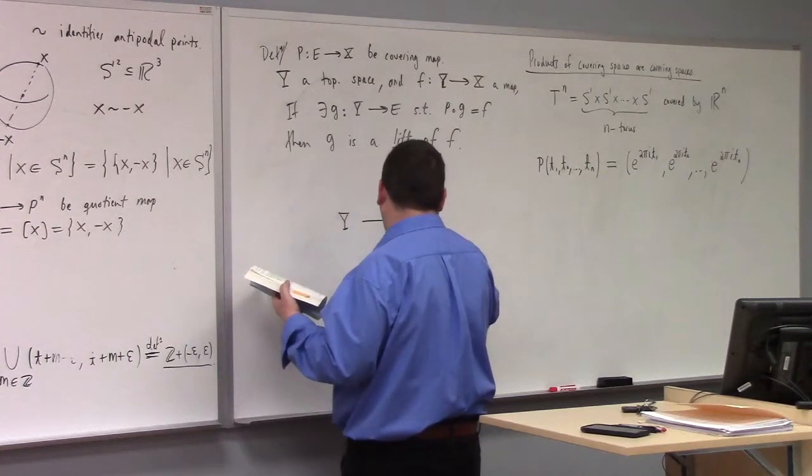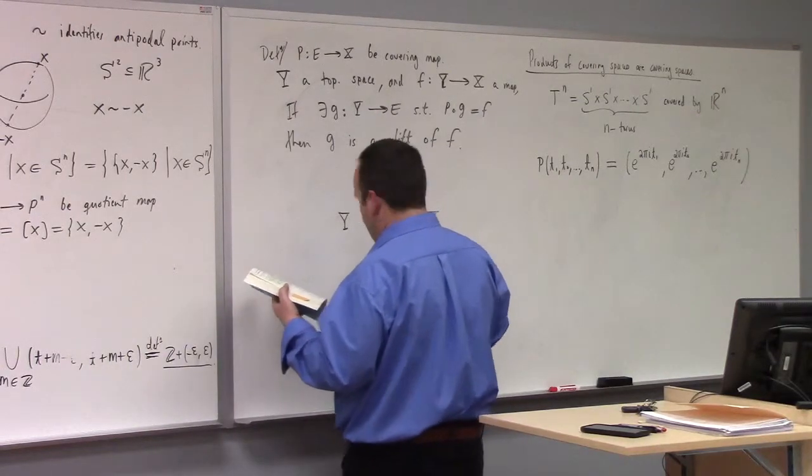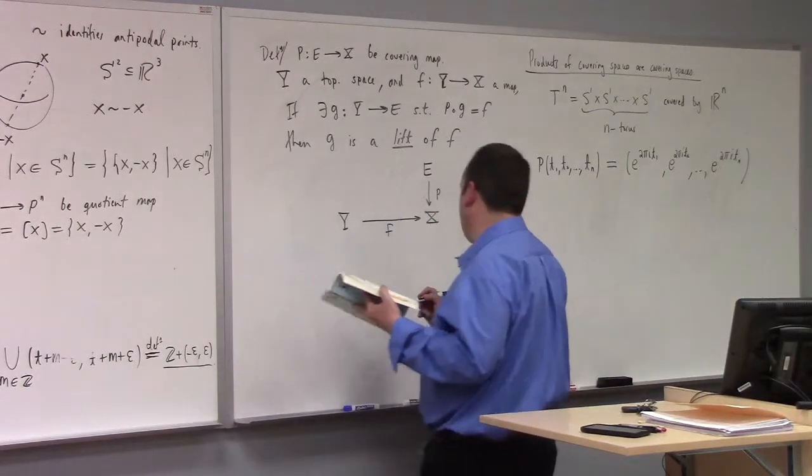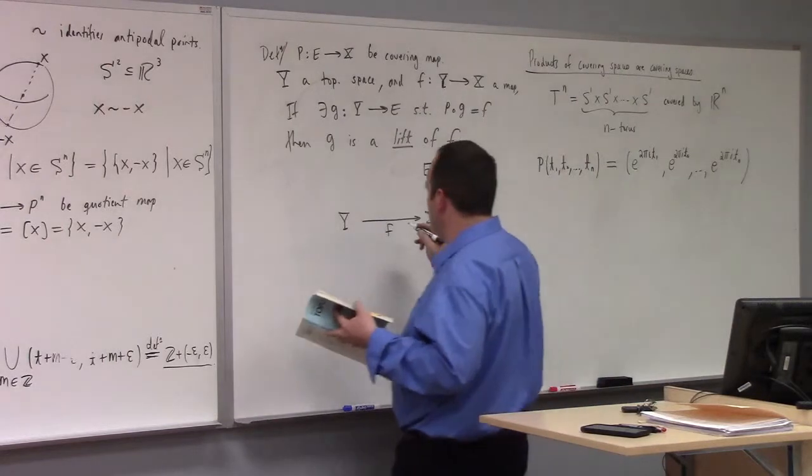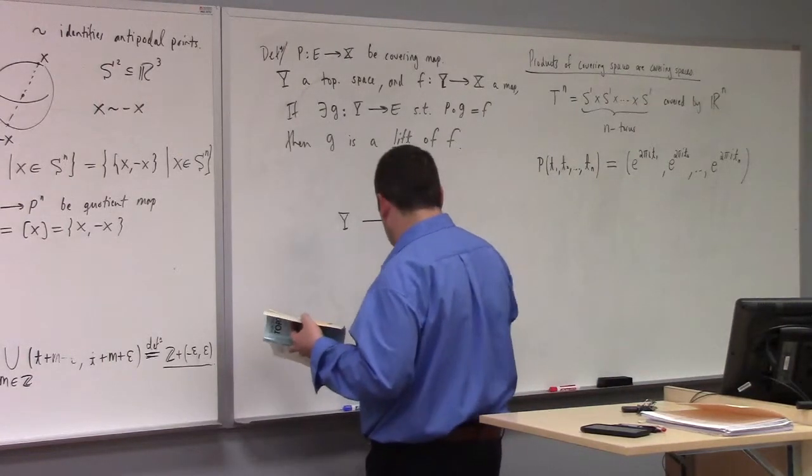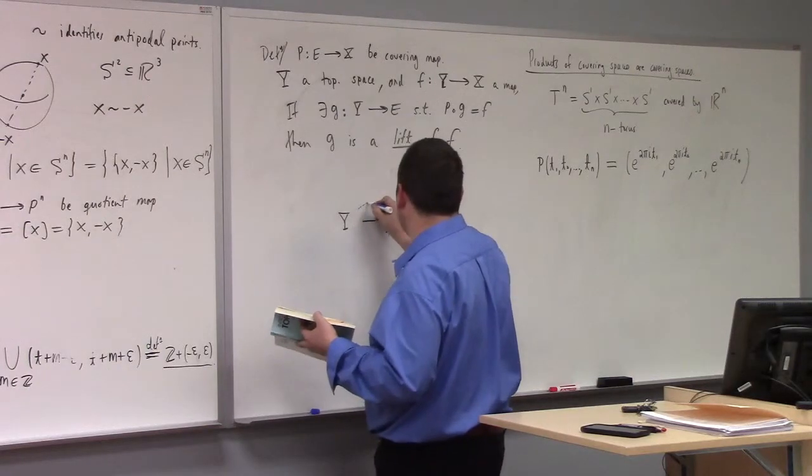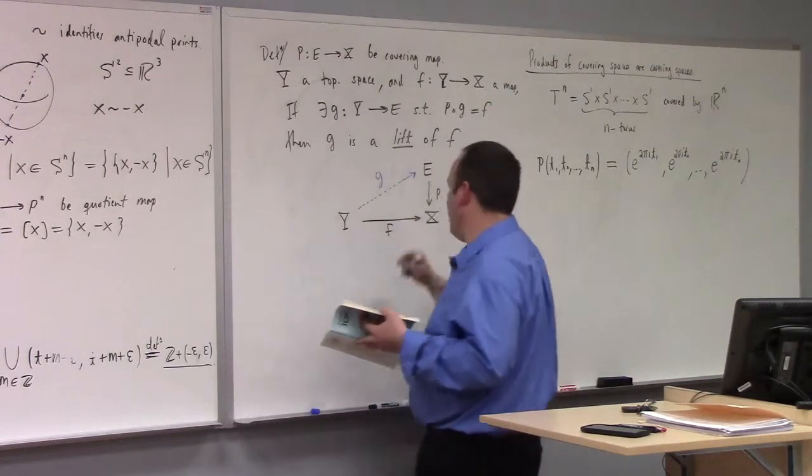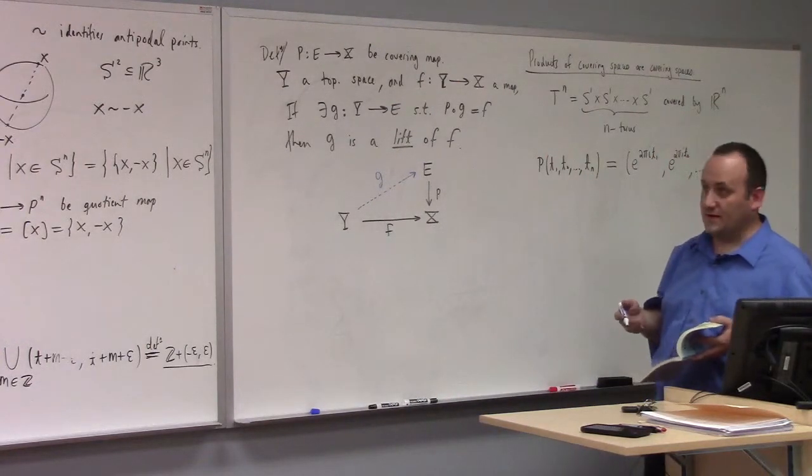We've got some mapping f that goes over to X. We've got a covering space of X, E, and here's our covering map p going from E down to X. Then a lift in this situation is if you can find a mapping g that makes this diagram commute. Then g is said to be a lift of f.